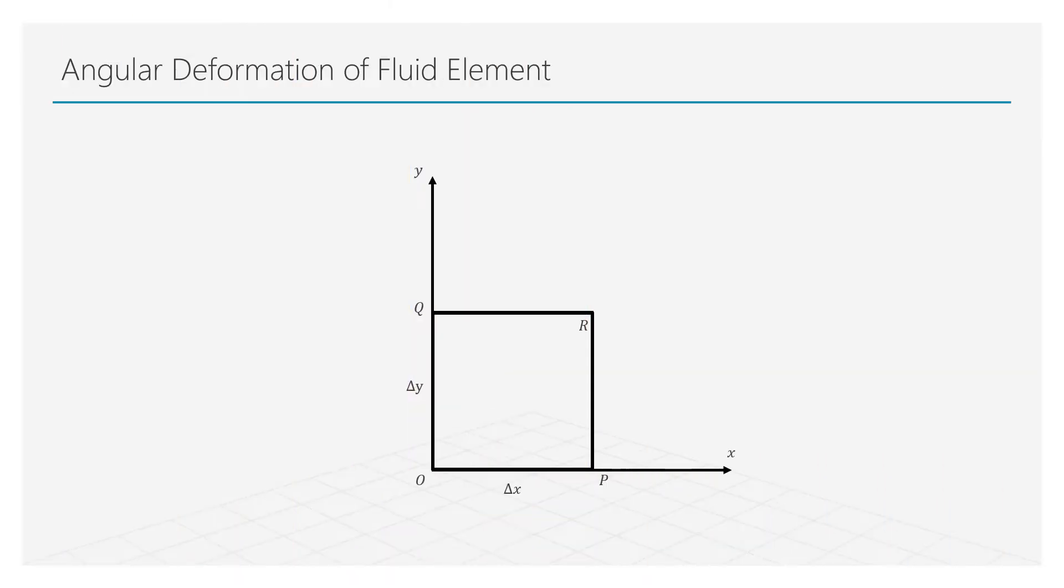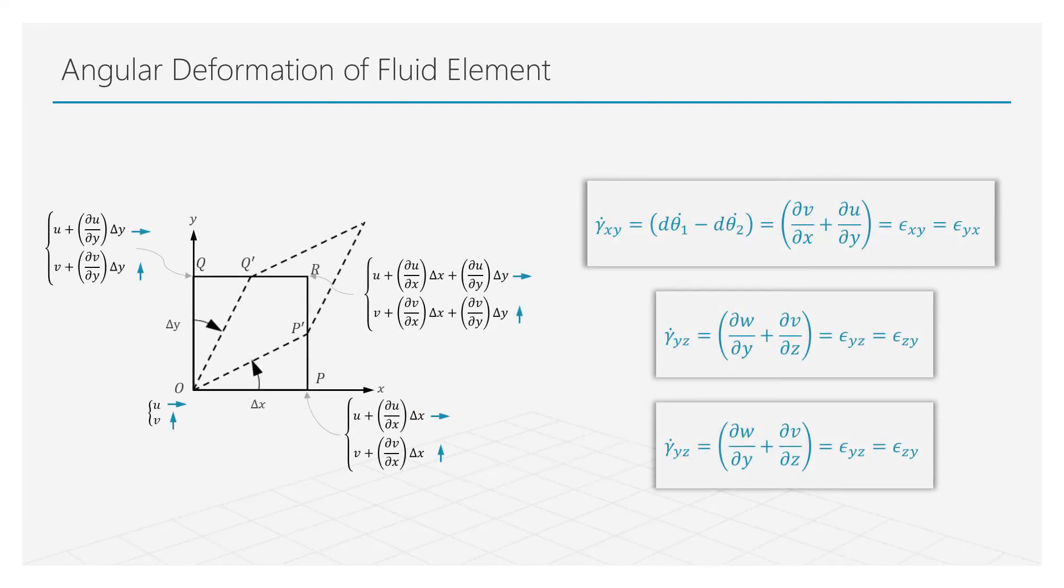Angular deformation is the third type of fluid motion and can be described as changing the angle between two mutually perpendicular segments of the fluid element. For the fluid element shown, it is defined as the rate at which the angle between line segments op prime and oq prime decreases. Over a time period delta t, the change in this angle due to angular deformation is because of rate of shearing strain. This expression is only applicable in the x-y plane. We can similarly define other components. Together, these six components are called symmetric rate of shearing strain or rate of angular deformation.